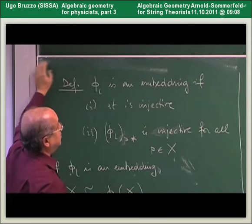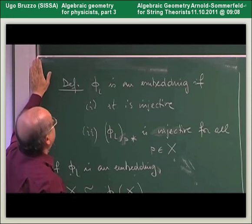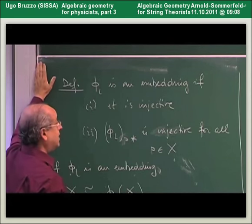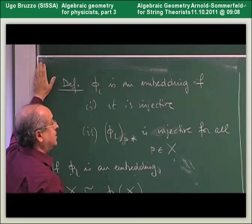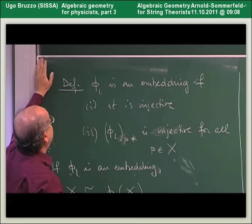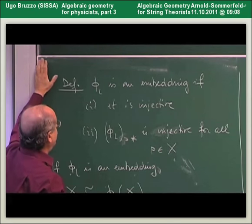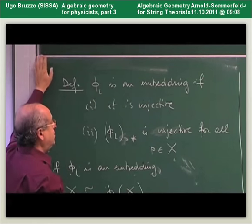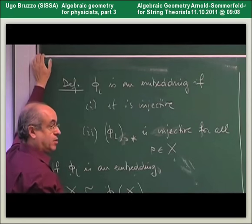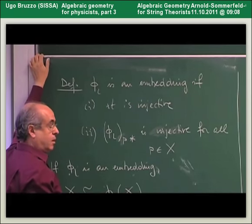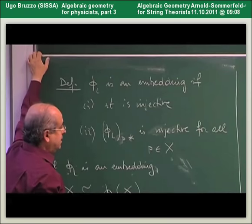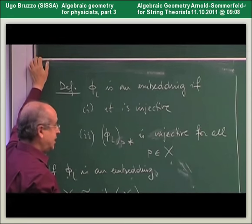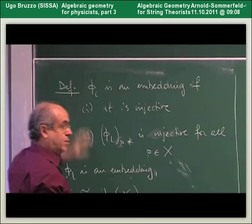Provided the map is defined at all — that is, the line bundle has sections and is base point free — we want to know whether the associated morphism into projective space is an embedding or not. This question is answered by the Kodaira Embedding Theorem.